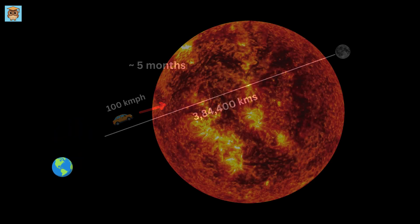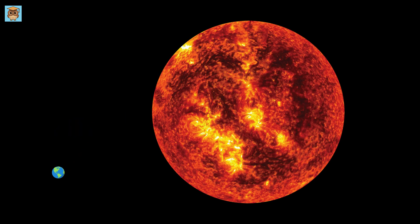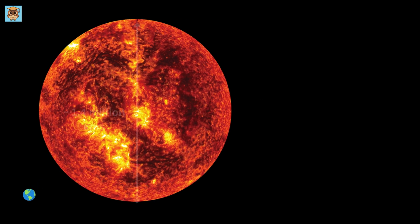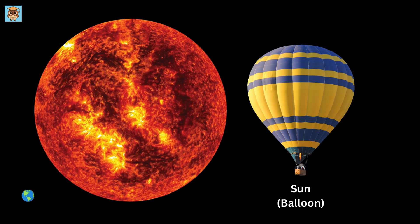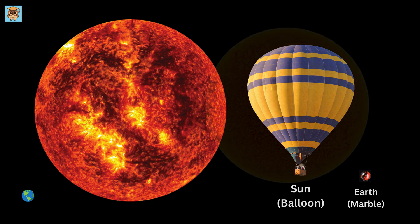But the Moon is nothing compared to the Sun. The Sun is so massive that you could fit one million Earths inside it. Its diameter? 1,390,000 kilometers. If the Sun were a giant balloon, Earth would be a tiny marble next to it. But let's go even crazier.